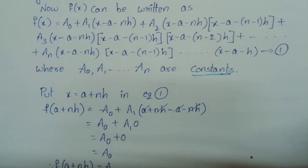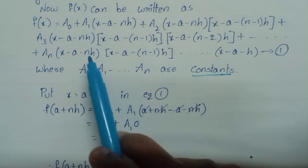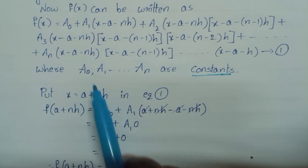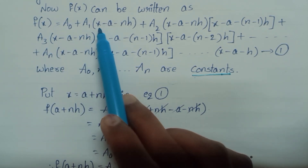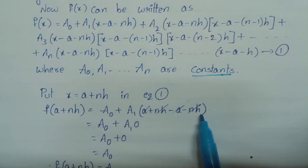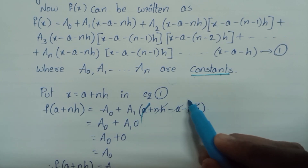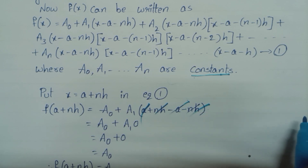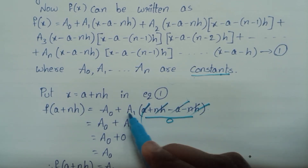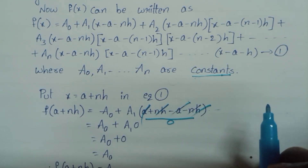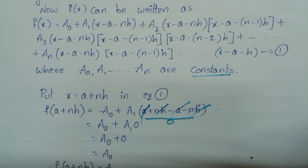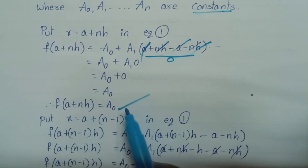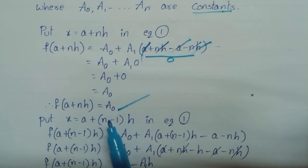Now in equation 1, put x = a + nh. So f(a + nh) = a0 + a1[(a + nh) − a − nh] + ... The (a − a) and (nh − nh) cancel, giving zero in all remaining terms. So f(a + nh) = a0. Therefore a0 = f(a + nh).